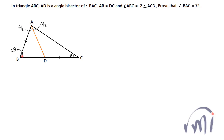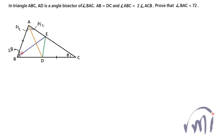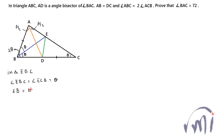Whenever I get stuck in these kinds of problems, I try to convert triangles into isosceles triangles. So I'll draw an angle bisector of angle B, which meets AC at point E. Since angle ABC is 2 theta, each half is theta, and the remaining angle at C is also theta. So triangle EBC is isosceles because angle EBC equals angle ECB, and both equal theta.